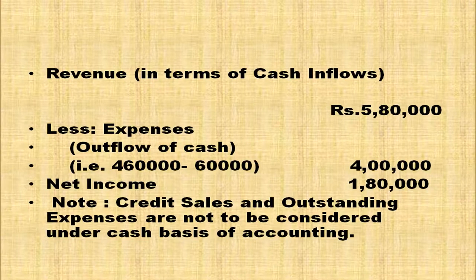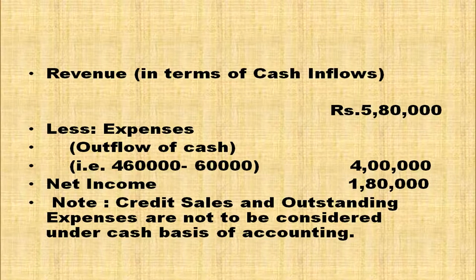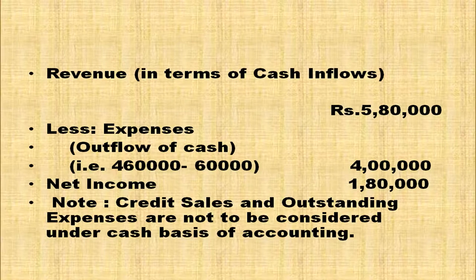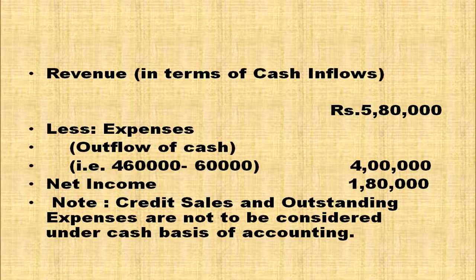Example: During financial year 2013-14, Ram had cash sales of Rs. 5,80,000 and credit sales of Rs. 2,65,000. His expenses were Rs. 4,60,000, out of which Rs. 60,000 are still to be paid. Under cash basis, only cash received and cash paid are considered. Revenue = Rs. 5,80,000 (cash sales only). Expenses paid = Rs. 4,00,000 (4,60,000 minus 60,000 unpaid). Net income = 5,80,000 − 4,00,000 = Rs. 1,80,000. Credit sales and outstanding expenses are not considered.